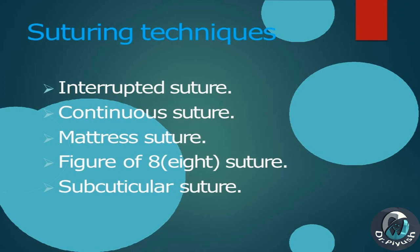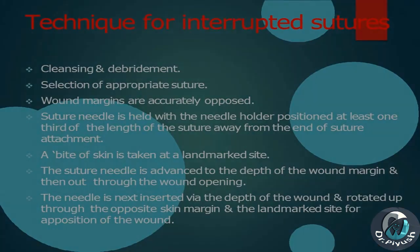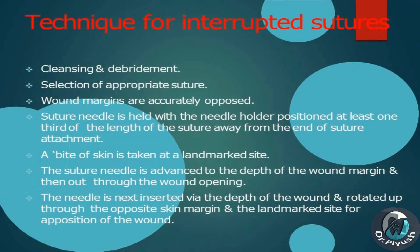Suturing techniques include: interrupted suture, continuous suture, mattress suture, figure-of-8 suture, and subcuticular suture. Interrupted sutures — Advantages: simple, can be performed in urgent situations, easy to remove. Disadvantages: fail to bring all surfaces into contact, less supportive for healing.